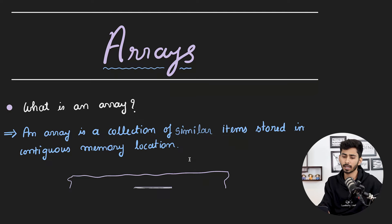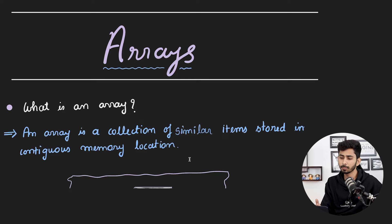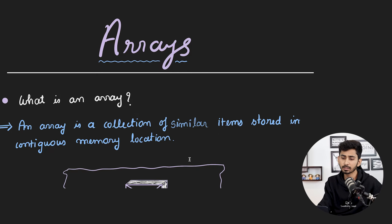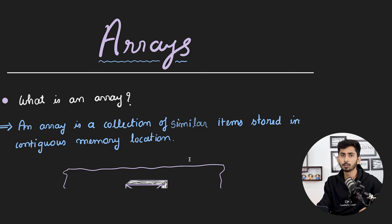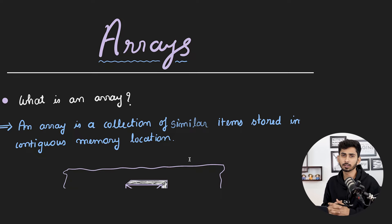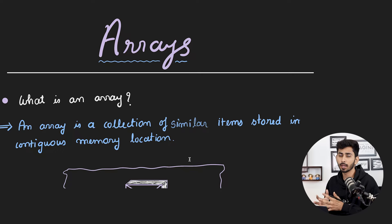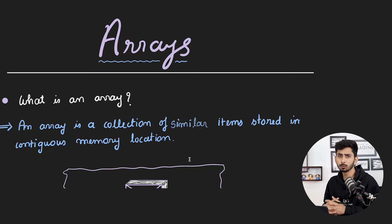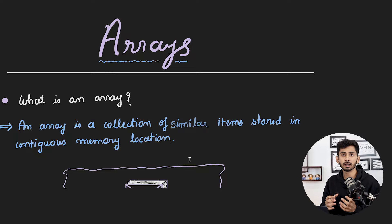First of all we need to understand what is an array. The formal definition of an array goes like this: an array is a collection of similar items stored in contiguous memory locations. Arrays are the most basic and fundamental data structures. Other data structures like stacks and queues are derived from arrays. Arrays are so prevalently used that it is generally the first data structure that students learn in an introductory CS course.